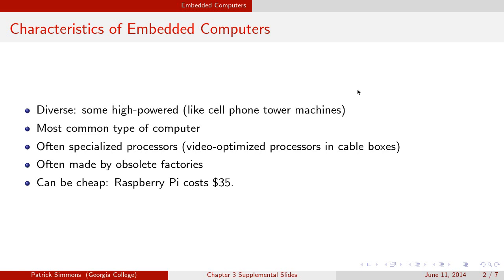A plant might start making desktop or server processors, then change to making embedded computers — maybe cell phone processors. As it gets more obsolete, it might switch to making processors for automobiles, and then right before it shuts down, processors for things you wouldn't even consider a computer, like a cordless phone. Because there are so many obsolete factories around making these embedded processors, you can often get an embedded processor for really cheap.